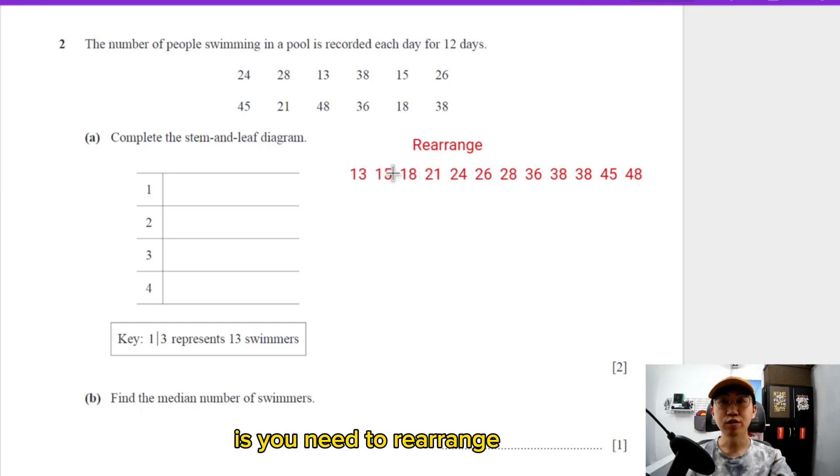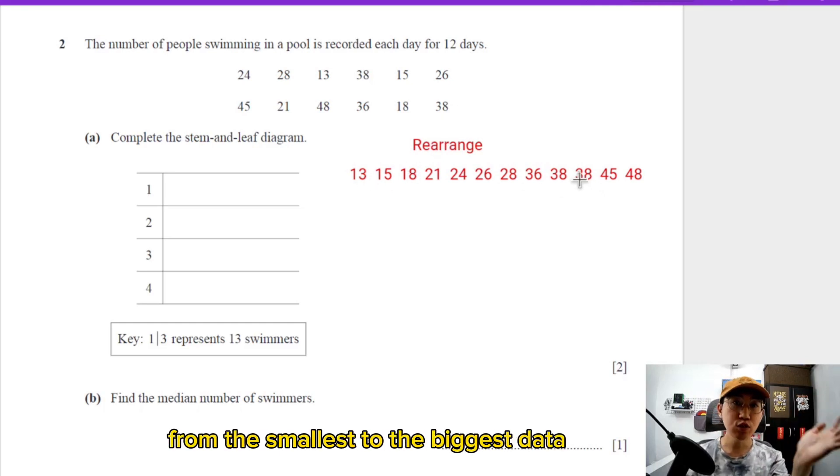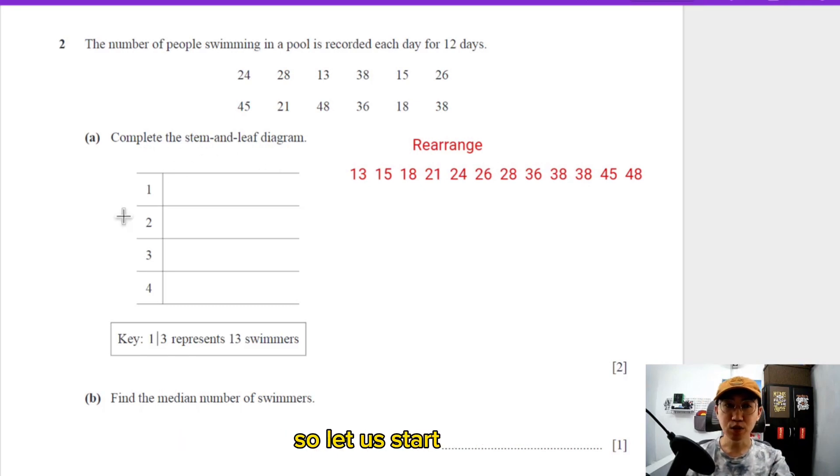What you need to do is rearrange the data from smallest to biggest - that's a very good habit. Now complete the stem and leaf diagram. Let's start: 1|3 represents 13 swimmers.